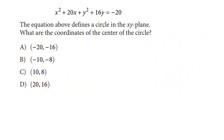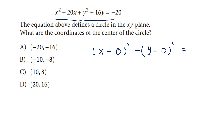Now let's look at a school math problem. The equation above defines a circle in the x,y plane — what are the coordinates of the center of the circle? We need to change this into the form x minus something squared plus y minus something squared equals r squared, the general form. We do this by using completing the square.